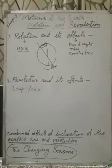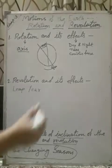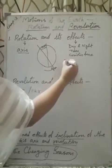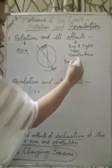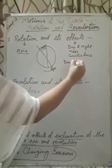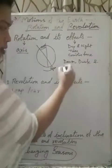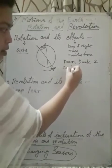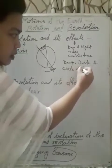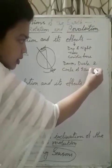Except this few, we can see this situation, dawn, dusk and circle of illumination.